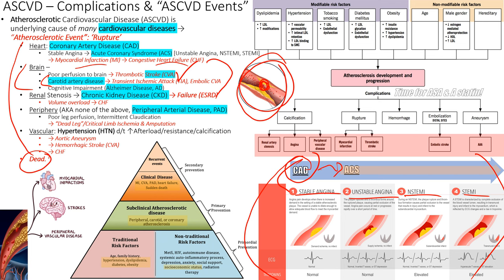Carotid atheromas can break off into the brain; if blockage lasts under 24 hours it's a TIA; if permanent, it's an ischemic stroke. Long-term ASCVD can also contribute to Alzheimer's disease. In the kidneys, ASCVD reduces function, reducing clearance of inflammatory mediators and fluid, worsening both ASCVD and CHF in a vicious cycle.